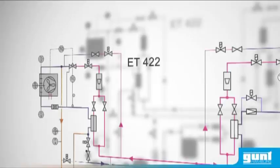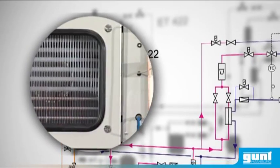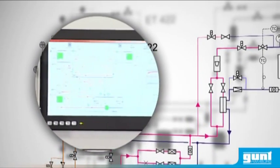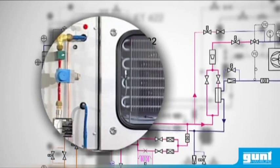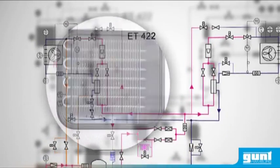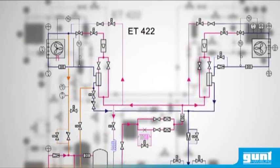ET422 represents the latest generation of Gunt refrigeration systems. In order to obtain a highly practical orientation, the system is equipped with commonly used components of industrial application.